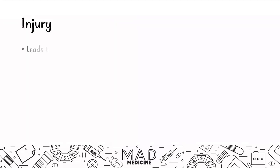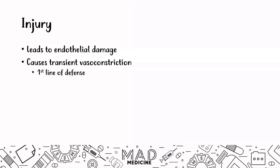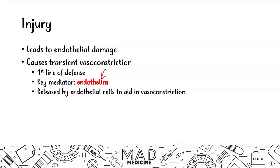Injury usually leads to endothelial damage — anything from a cut to a ruptured atherosclerotic plaque. That leads to endothelial damage and causes transient vasoconstriction, which is the first line of defense. This is mediated by endothelins, which are released by endothelial cells to aid in vasoconstriction. They can be released from neighboring endothelial cells or from the area of damage itself. This vasoconstriction can also be mediated by a neural stimulation reflex.